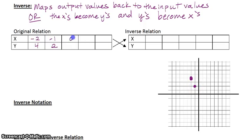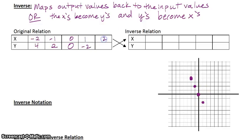Next, 0, 0 — there it is. Next, 1, negative 2. And last but not least, 2, negative 4. Alright, there's our graph.